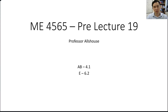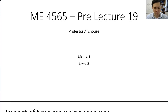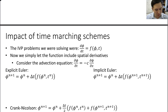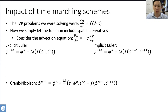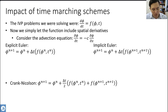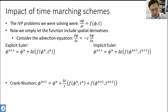This is the video for pre-lecture 19. In the previous lecture we looked into the advection equation and talked about how we could use some of the time marching schemes developed previously to solve partial differential equations. The initial value problem we were originally solving was just d phi/dt equals f of phi and t. Now we simply let that f function potentially include derivatives like d phi/dx.